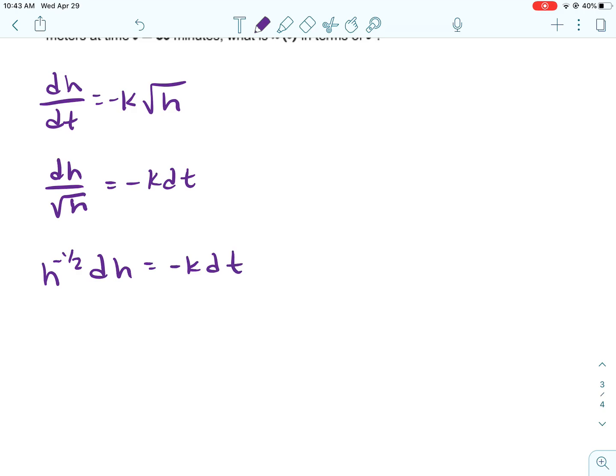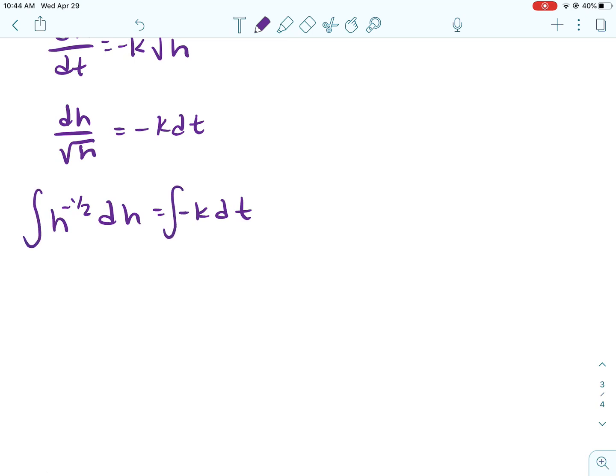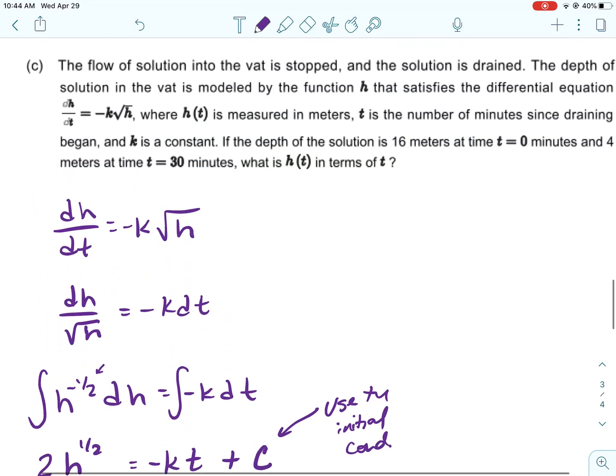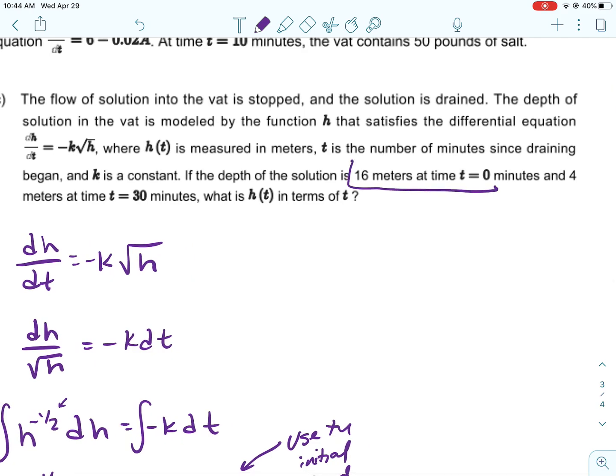And this is what I was talking about on the last one, where if this denominator has a power, we don't do natural log. So this is the same as H to the one-half. So I would move it up to the numerator, make it H to the negative one-half. And then I would integrate. So I'm going to add 1 to the exponent, and that's going to be one-half, and then divide by that, and this is going to be 2. And then here, I would just basically multiply by a T. So the integral or antiderivative of negative K with respect to T is going to be negative KT. Don't forget your plus C.